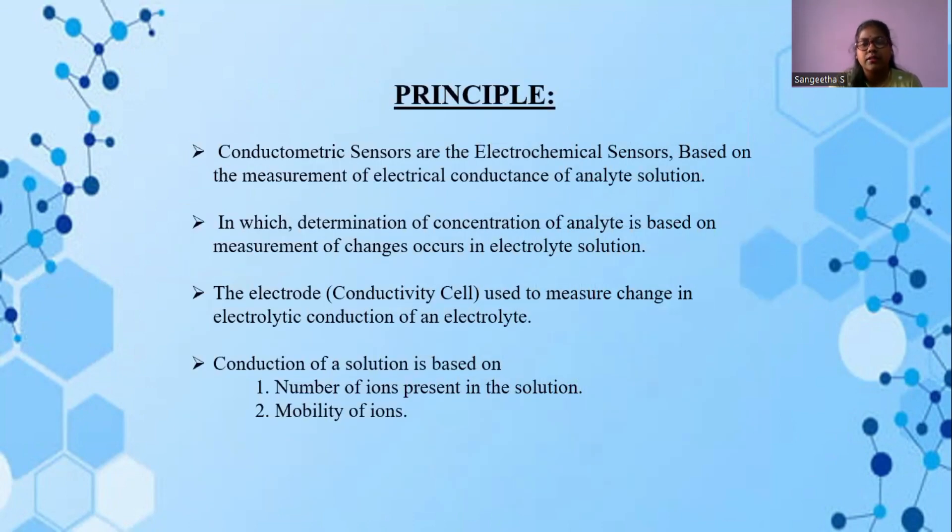Principle of conductometric sensors. Conductometric sensors are the electrochemical sensors based on the measurement of electrical conduction of analyte solution, in which determination of concentration of analyte is based on measurement of analyte solution. The electrode that is conductivity cell used to measure change in electrolyte condition of an electrolyte. Conduction of a solution is based on number of ions present in the solution and mobility of ions.